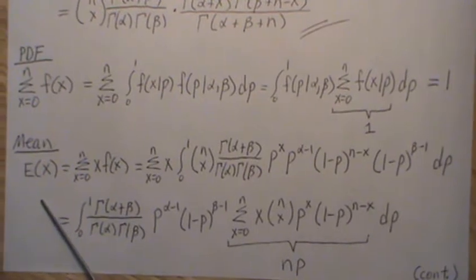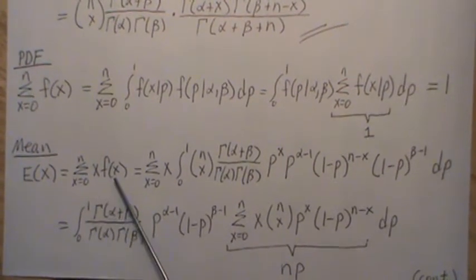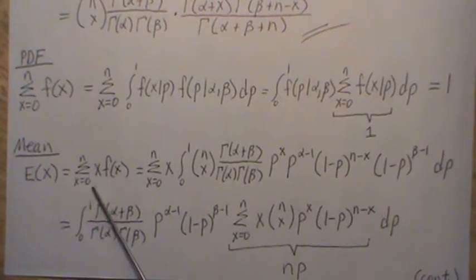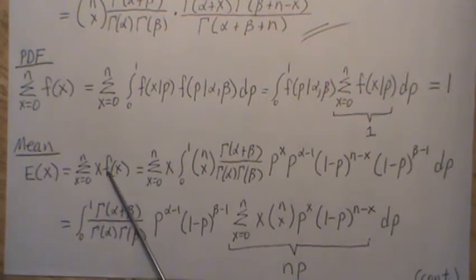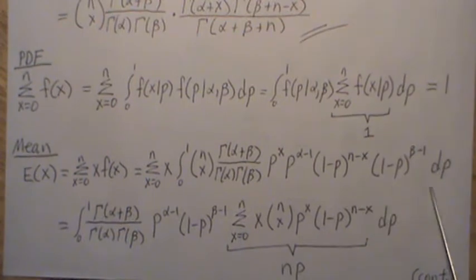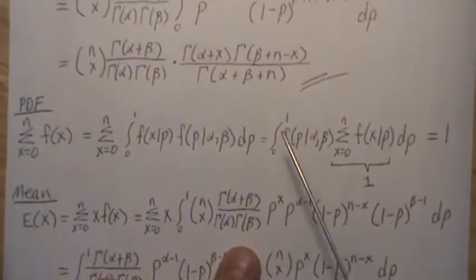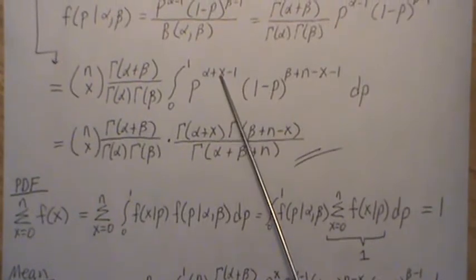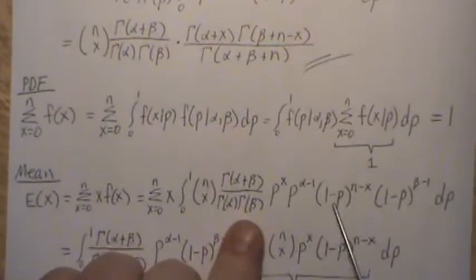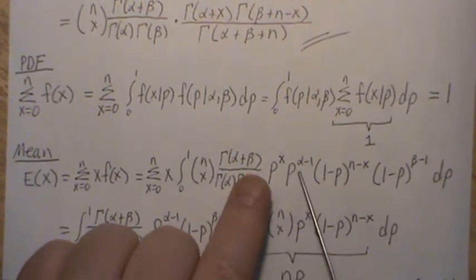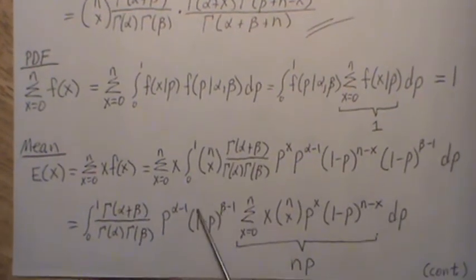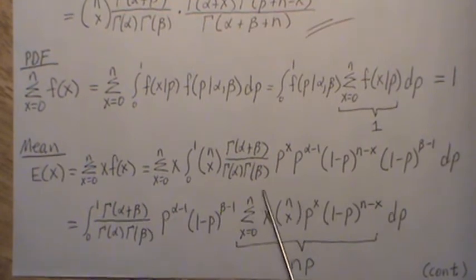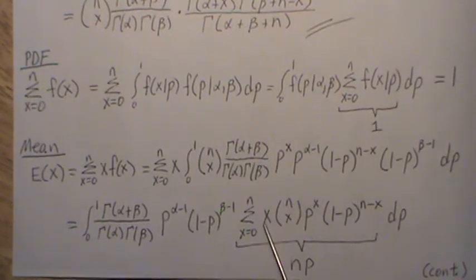Now let's look at the mean. The mean is the expected value of X, so we take X times the probability of observing that X, summed over all possible values. Plugging in f of X, I've separated the X by itself and the (N minus X) by itself. Taking the sum inside, this is X times a binomial distribution — which is the mean of a binomial distribution — equal to N times P.